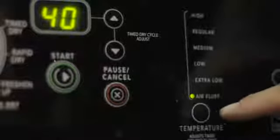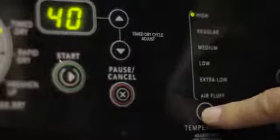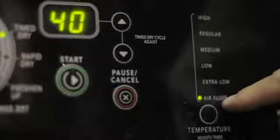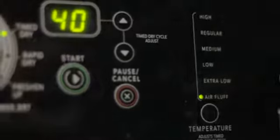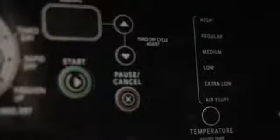Here we see another dryer where it's set on air fluff. This is an electronic dryer, and you have different settings for different temperatures. If the previous user left it on air fluff, you put your clothes in, you may find you didn't have any heat. So simply change the cycle and start the dryer.